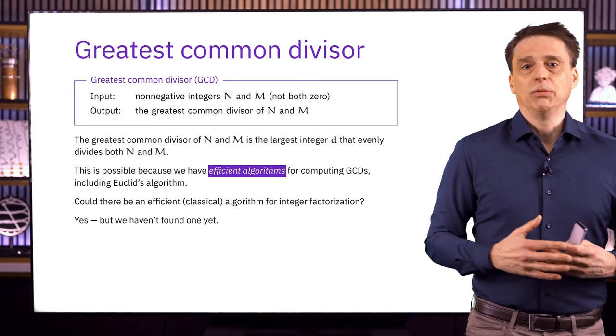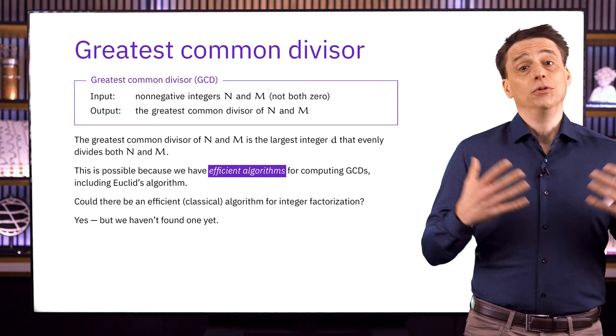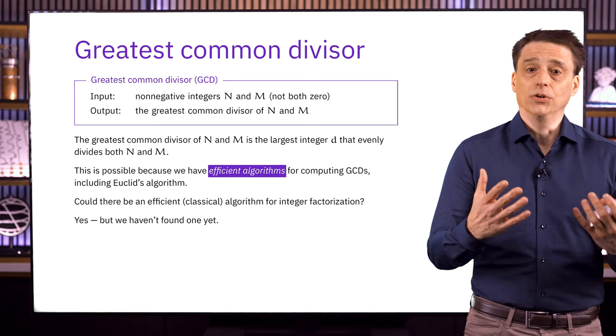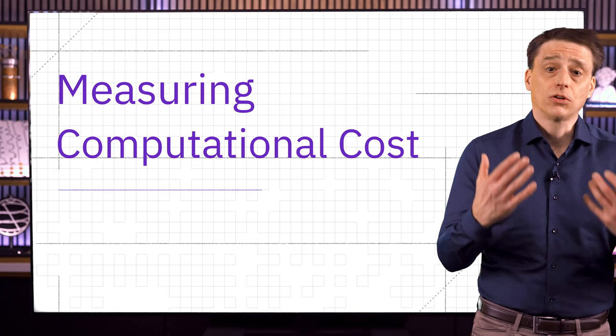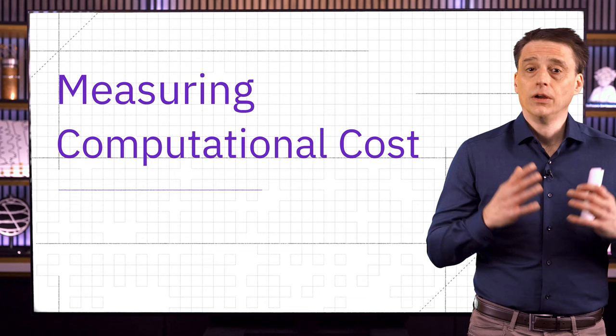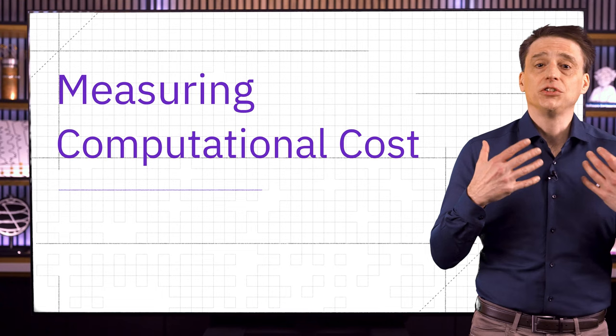Of course, this is all building up to Shor's algorithm, which we'll see in the next lesson — an efficient quantum algorithm for computing prime factorizations. But we still have some ground to cover before we get there. Next, we're going to talk about a mathematical framework through which we can measure the computational costs of different algorithms, including ones we've already talked about. We're going to be focusing very narrowly on circuits, which is just a small piece of a much broader subject.